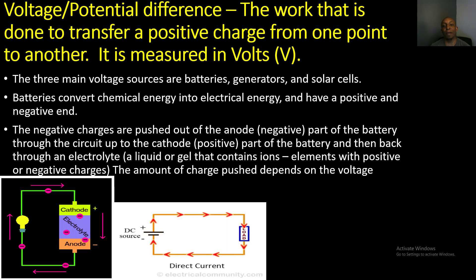There are three main voltage sources: batteries, generators, and solar cells. Batteries convert chemical energy into electrical energy and have a positive and negative end. The negative charges are pushed out of the anode — the negative part of the battery — through the circuit up to the cathode, which is the positive part, and then back through an electrolyte, a liquid or gel that contains ions. Ions are elements with positive or negative charges.